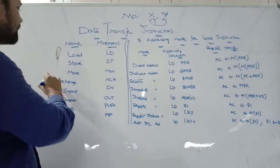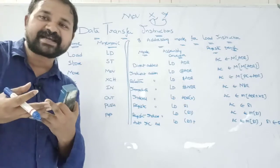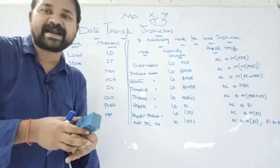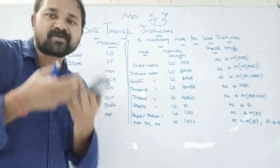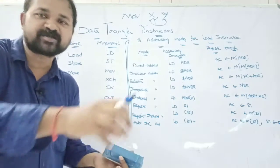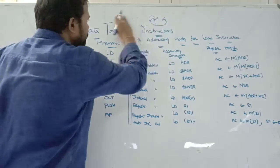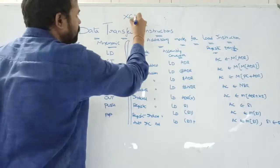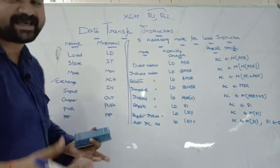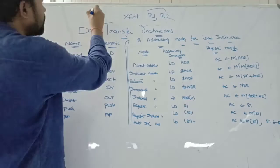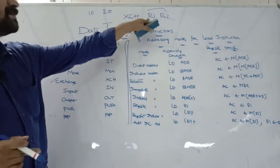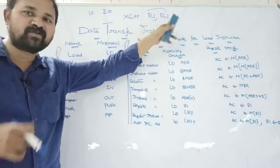Exchange instruction is denoted by XCH. It is useful to exchange the content at two memory locations, between two registers, or between a processor register and a memory location. For example, 'XCH R1, R2' exchanges the contents of R1 and R2. If initially R1 contains 10 and R2 contains 20, after the exchange R1 will become 20 and R2 will become 10.